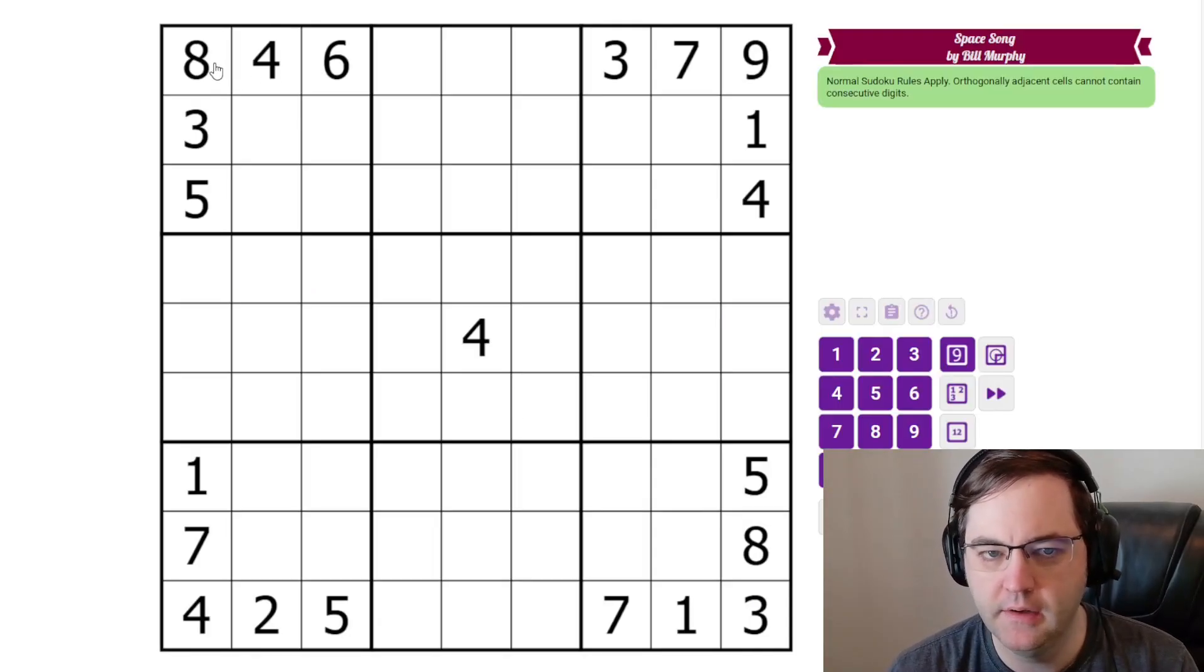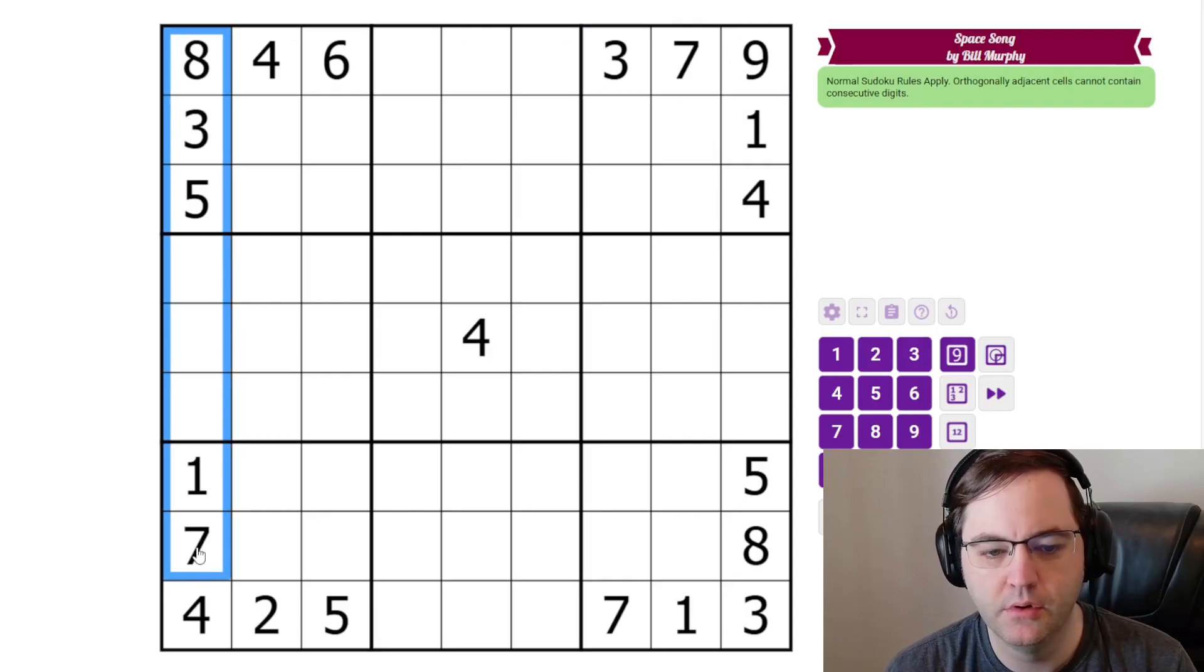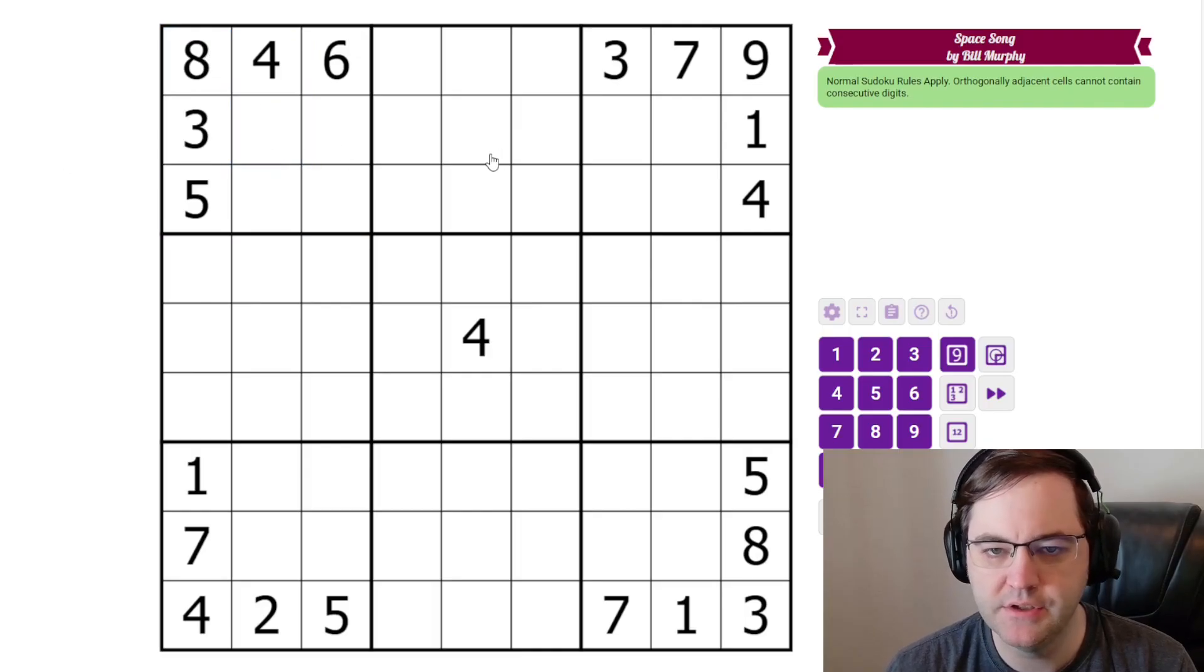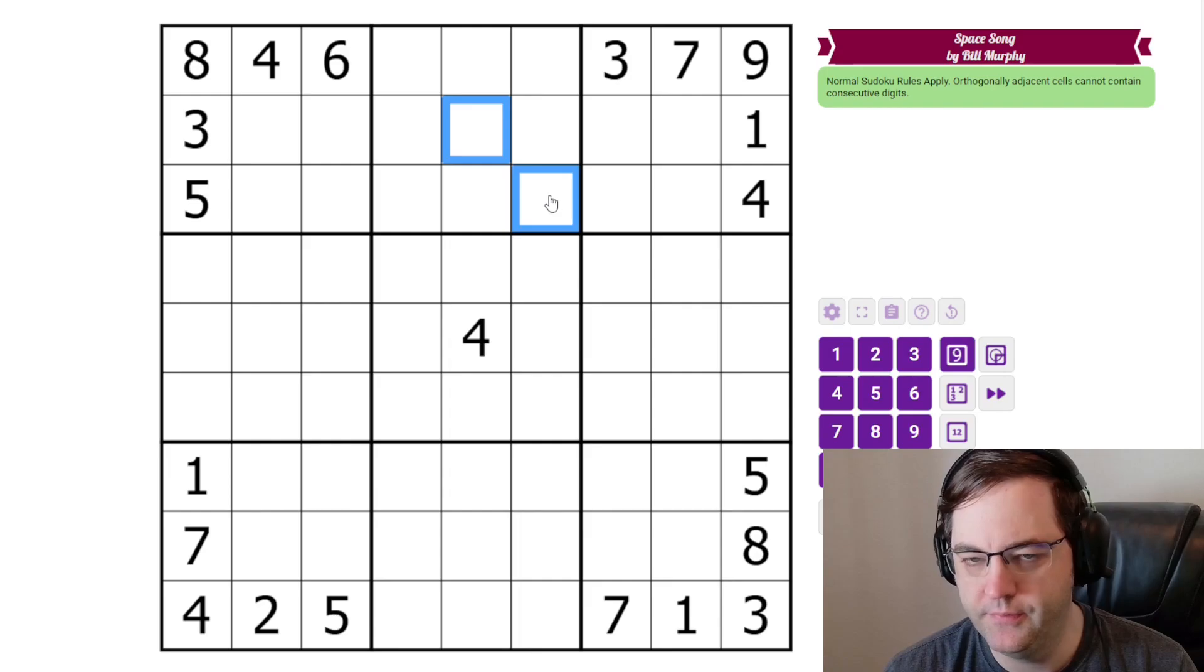This is a non-consecutive Sudoku. We have normal Sudoku rules, 1 to 9 in each row, column, and 3x3 box. Additionally, digits in orthogonally adjacent cells cannot be consecutive.